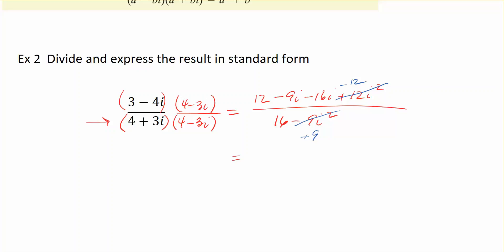So, the numerator. We have 12 minus 12. So, the 12s are gone. And negative 9i minus 16i is negative 25i. The denominator looks like 16 plus 9, which is 25.